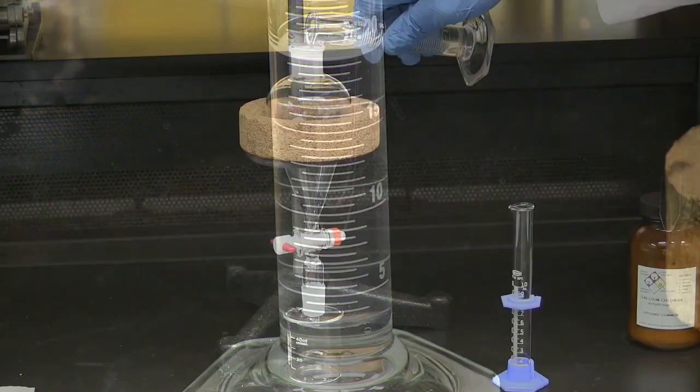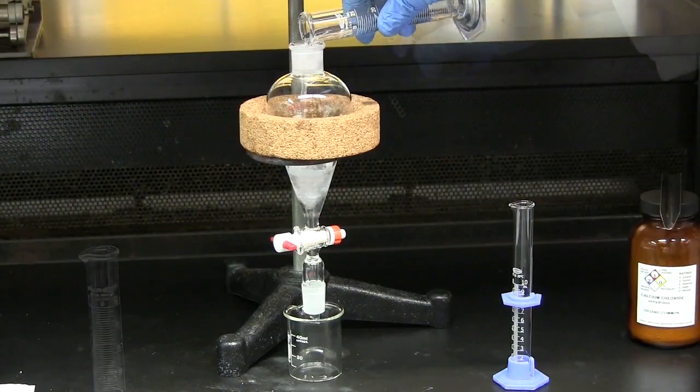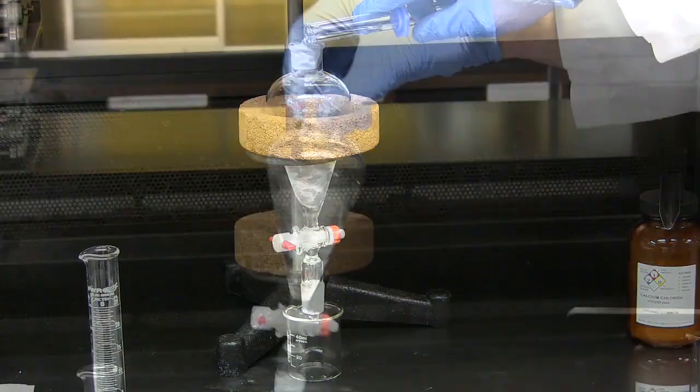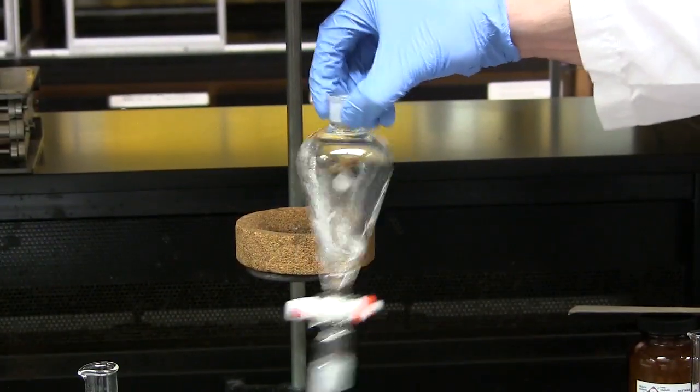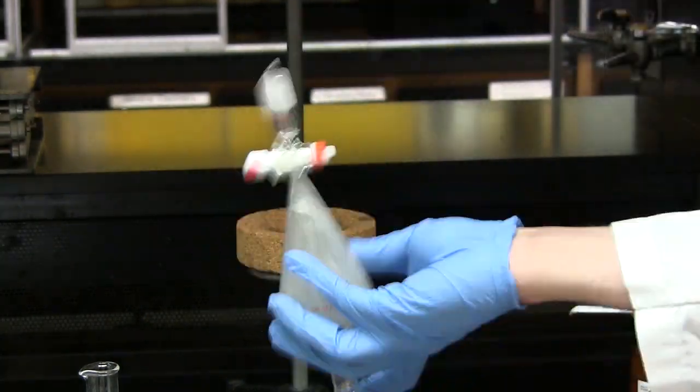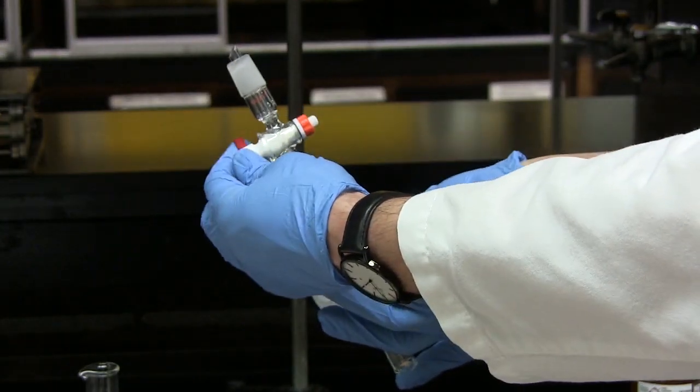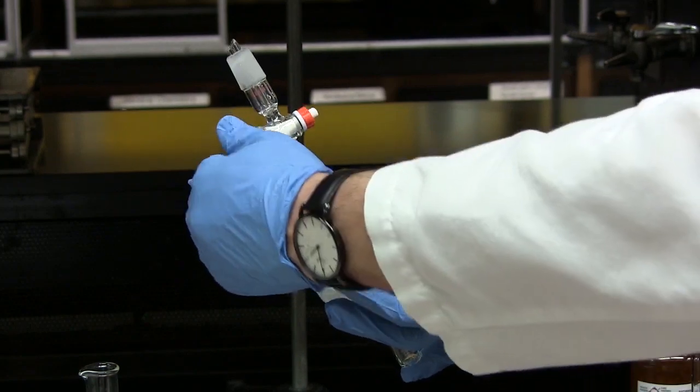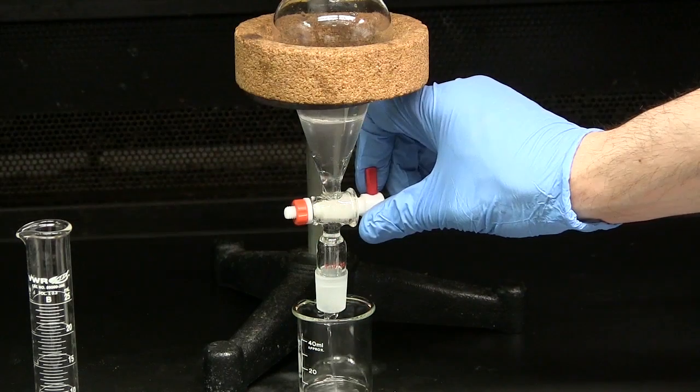Measure the volume of the organic layer then transfer to a separatory funnel. Add 10 ml of water, initially swirl the mixture with the stopper off. Next, stopper the separatory funnel and briefly shake. Remove the aqueous layer.